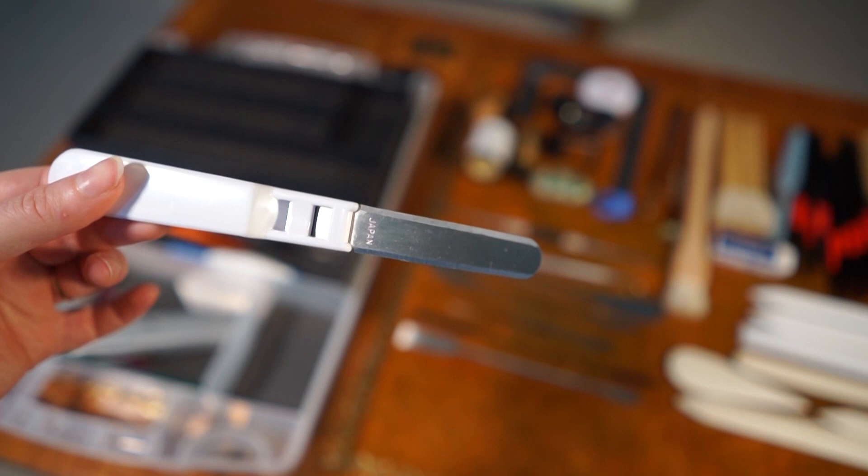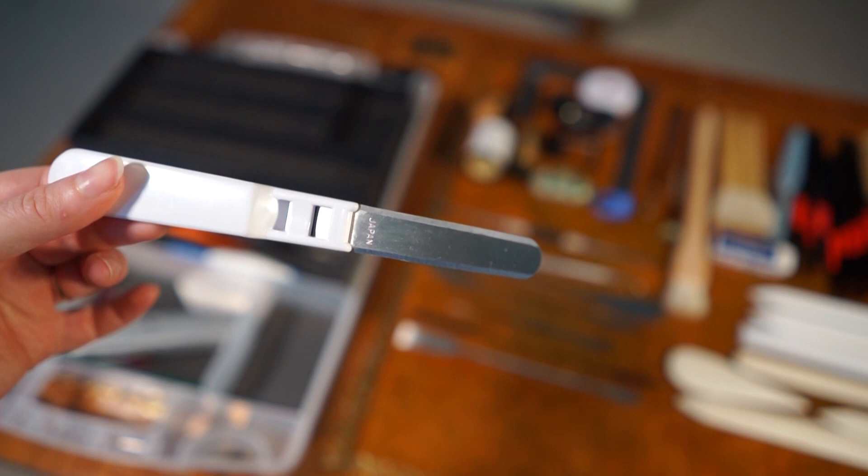I also have this Japanese blade. I actually don't know what this is called but it's a very new acquisition in my toolbox. I think I could use it quite well in a backing removal, so I'm looking forward to having a backing removal where I can give this a go. So I think that's all my sharp tools.